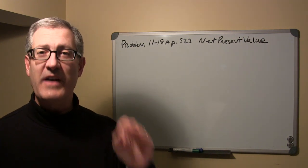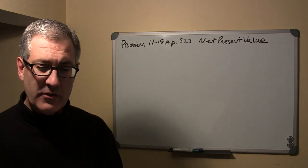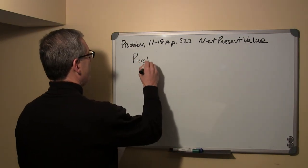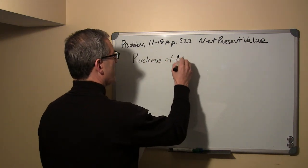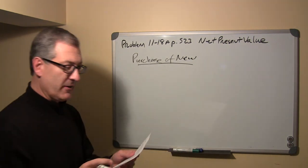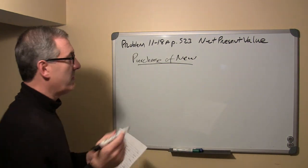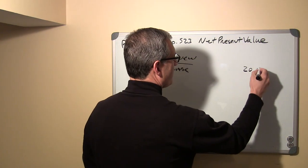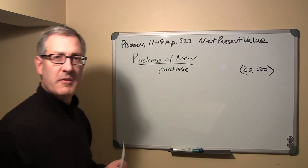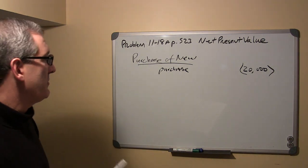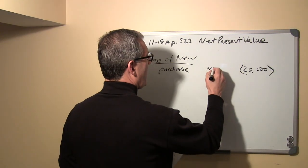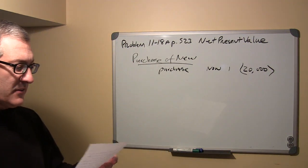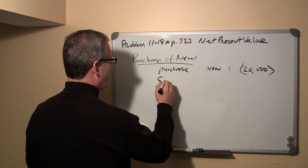Let's first look at the costs associated with the purchase of a new generator. The purchase price is twenty thousand dollars — shown in brackets because it's a disbursement, money going out. It occurs now, and it happens only once.